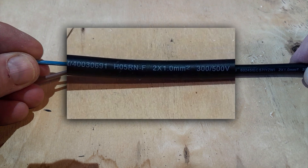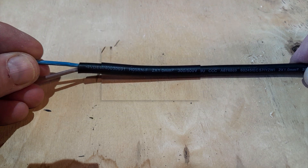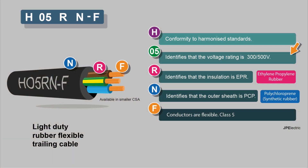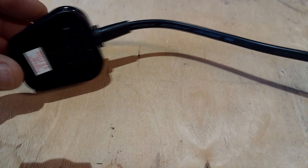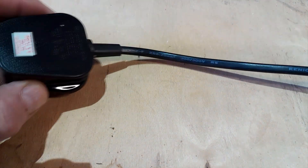Here we have another cable. This cable's code is H05RNF — this cable is 2×1mm² and is active cable to some LED lights for gardens. You'll notice there's no CPC in this. The only difference from H07 is the 05, which identifies that the voltage rating is 300–500 volts. It's classed as a light-duty rubber flexible cable. The insulation is EPR, the outer sheath is PCP, the conductors are flexible, and it conforms to harmonized standards. You can also get this in smaller cross-sectional areas, often used for outdoor lighting and smaller appliances.